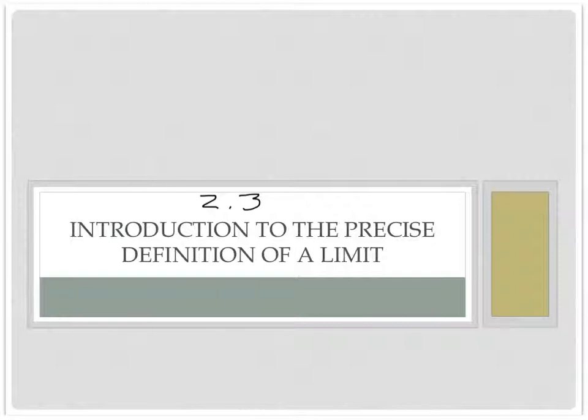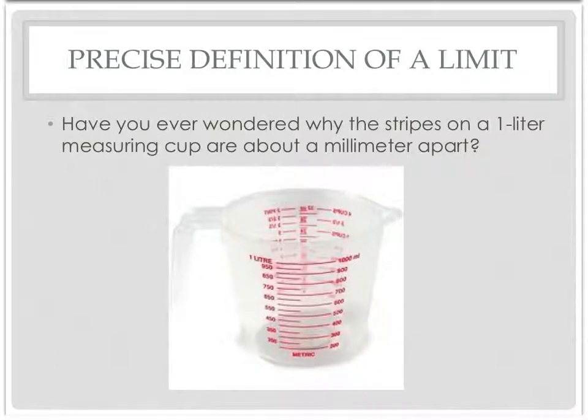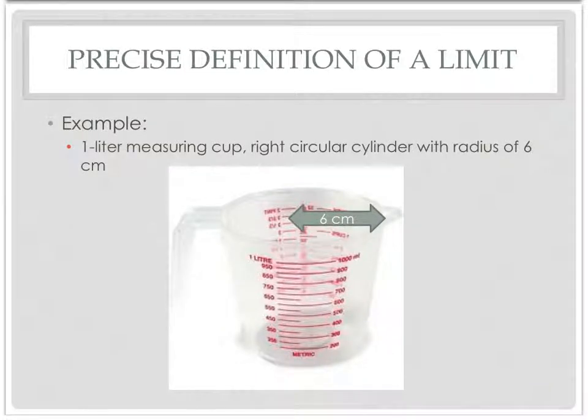This is the introduction to the precise definition of a limit. To really build your confidence up, this is the section that kills students. It's very theoretical. A lot of students have trouble with the why behind it, and let's hope I can kind of send it today to you. I mentioned to you guys before about the whole measuring cup thing. You're making potatoes, measuring exactly two cups. Can't get exactly two cups. You're a little bit above, a little bit below. Is that enough to ruin the potatoes? Here is an example that says, have you ever wondered why the stripes on a one-liter measuring cup are about a millimeter apart? I know this has kept you up many nights, right?